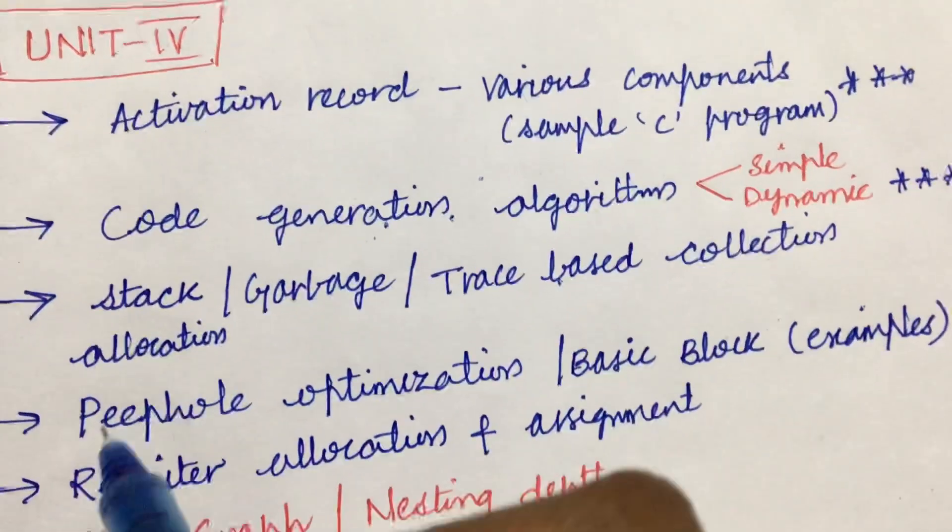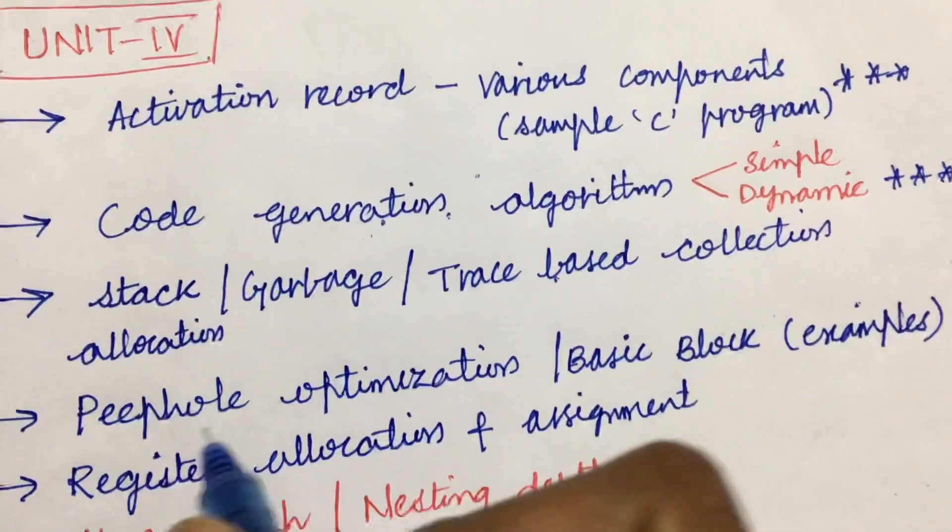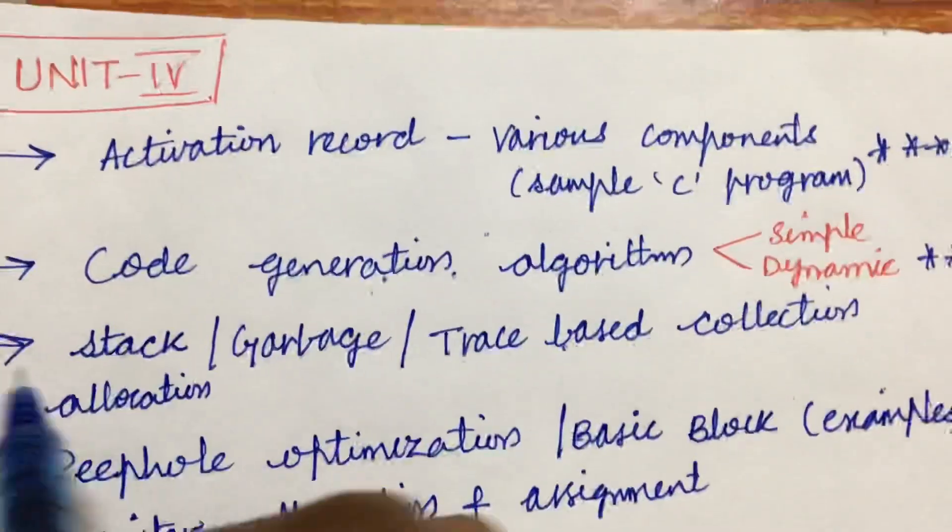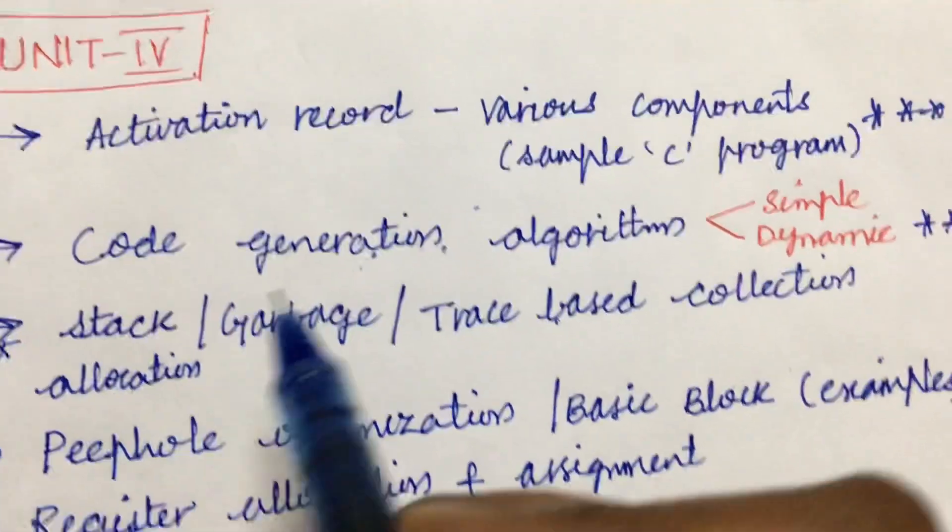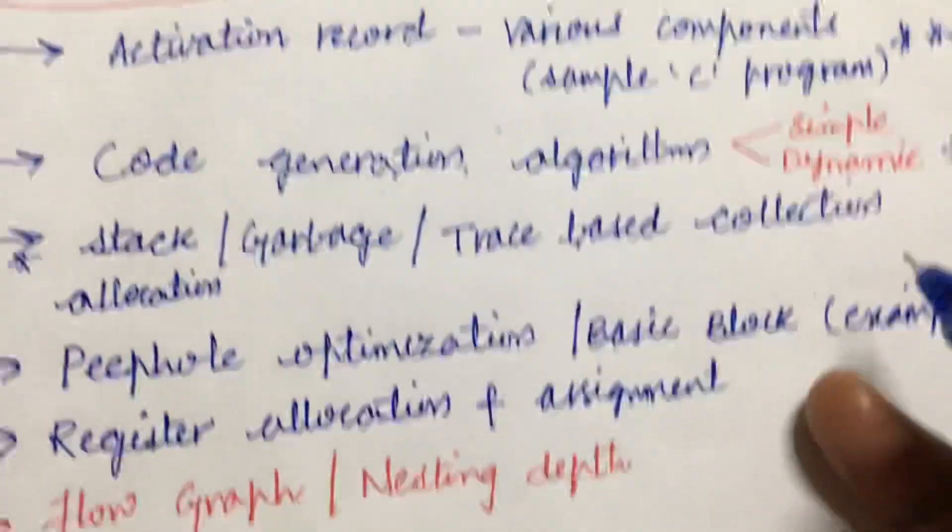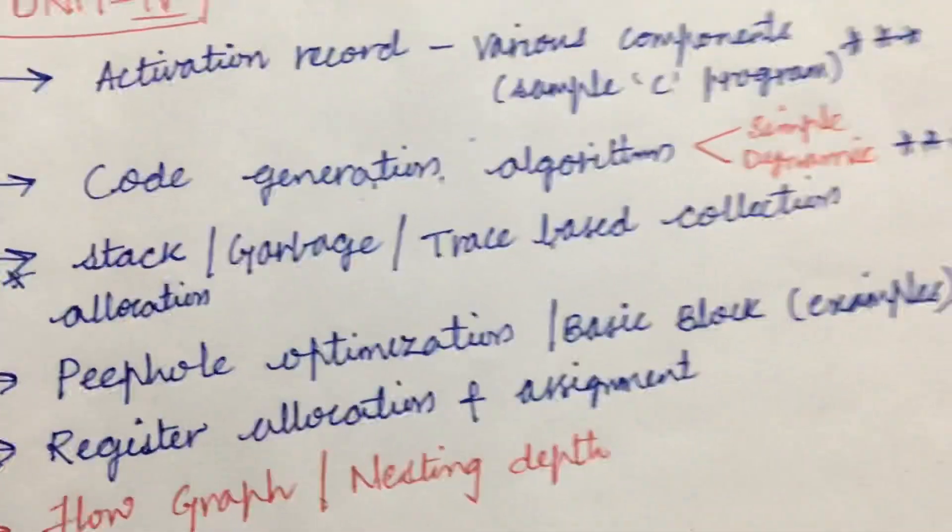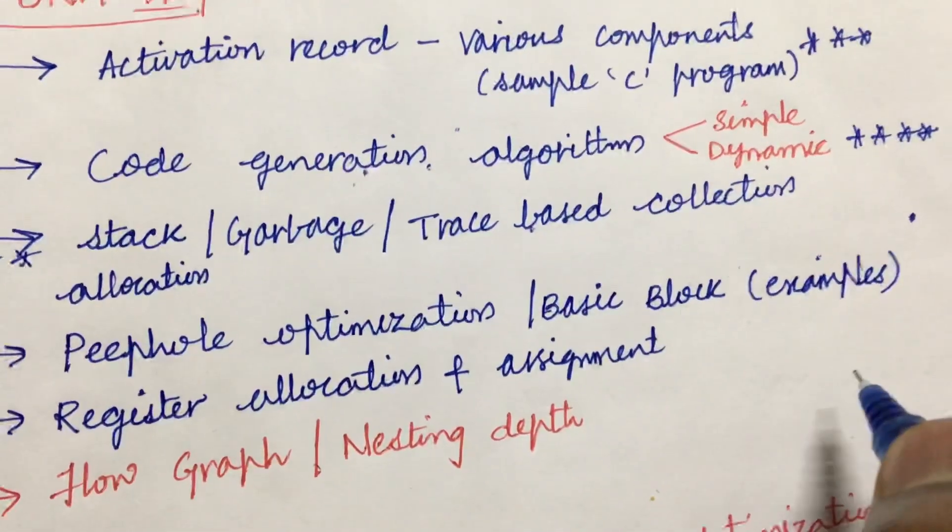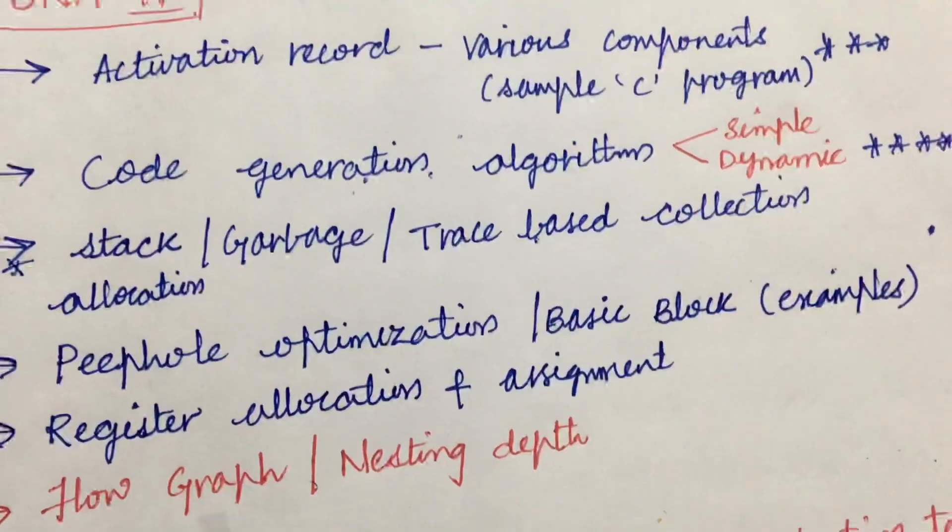Later, define stack, guard location, as well as garbage collection or trace-based collection - out of these three we may expect any one point for a five or seven-mark question. Dear students, peephole optimization as well as basic block and its examples were also asked a few times.